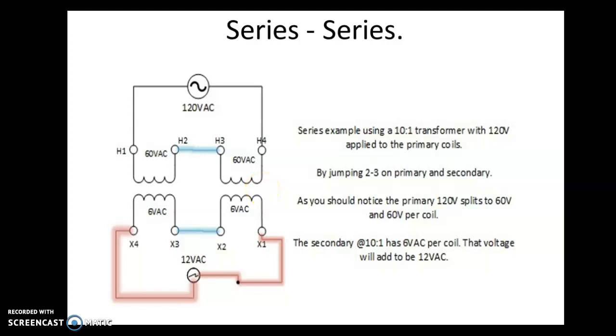When you put the transformer in series, you simply jump out the 2 to 3. So the second terminal on the first coil to the first terminal on the second coil. We're always going to apply voltage to 1 and 4 so that we're using the entire transformer. On the secondary side, you see 6 volts and 6 volts. Once we put our jumper between X2 and X3, we would then connect our load or our meter to X1 and X4.